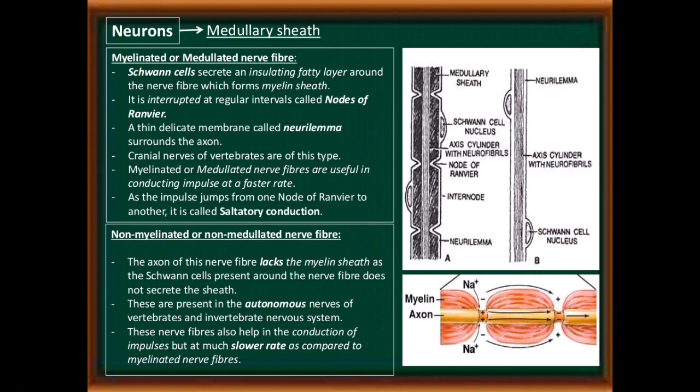Medullary sheath — myelinated or medullary nerve fibers: Schwann cells secrete an insulating fatty layer around the nerve fiber, which forms the myelin sheath. It is interrupted at regular intervals called nodes of Ranvier. A thin delicate membrane called neurolema surrounds the axon. Cranial nerves of vertebrates are of this type. Myelinated nerve fibers are useful in conducting impulses at a faster rate, as the impulse jumps from one node of Ranvier to another — this is called saltatory conduction.